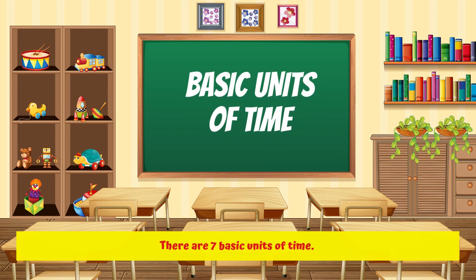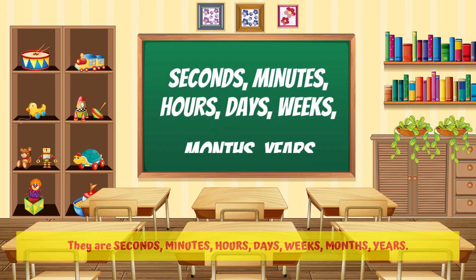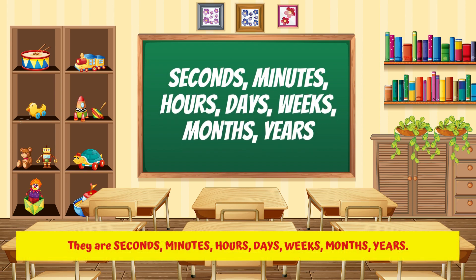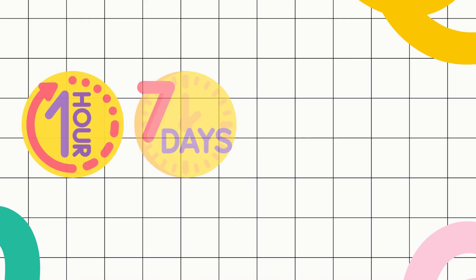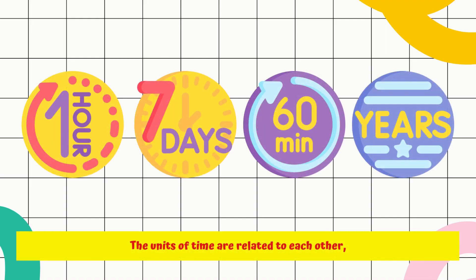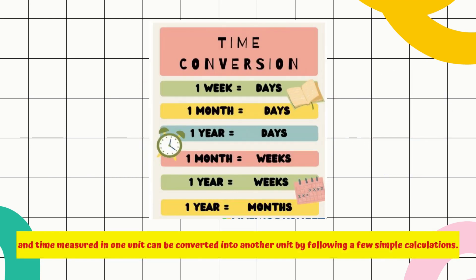There are seven basic units of time. They are seconds, minutes, hours, days, weeks, months, and years. The units of time are related to each other, and time measured in one unit can be converted into another unit by following a few simple calculations.